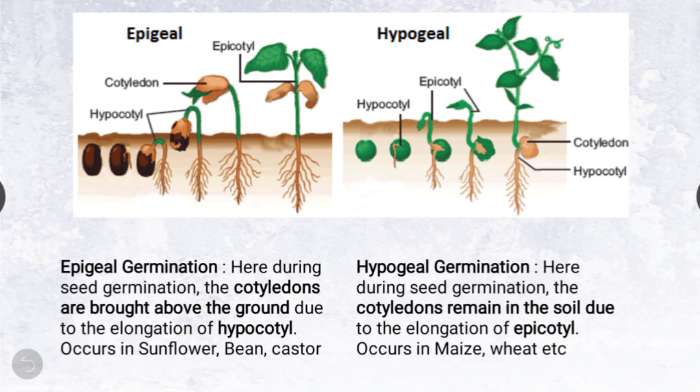In epigeal germination, the cotyledons are brought above the ground due to elongation of the hypocotyl — this occurs in sunflower, bean, and castor crops. In hypogeal germination, the cotyledons remain in the soil due to elongation of the epicotyl — this occurs in maize, wheat, etc.